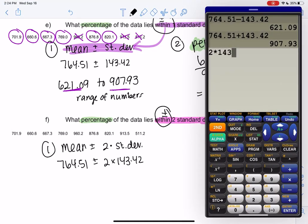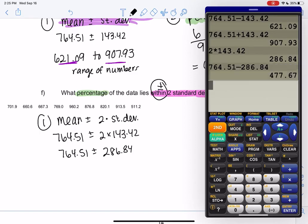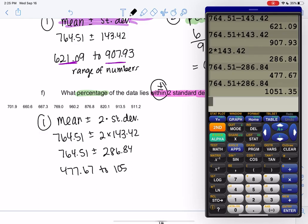So we're going to double the standard deviation before we add and subtract. So now we're going a little bit farther out, and we're going to add and subtract 286.84. And these percents will be really significant, which we'll see in a later section. Right now we're just kind of practicing the math behind it. So I'm going to subtract first and then add. So my range of numbers is 477.67 up to 1051.35.